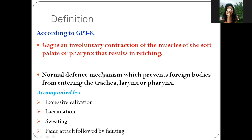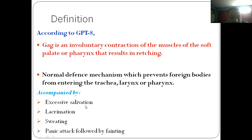It is a normal defense mechanism which prevents foreign bodies from entering the trachea, larynx or pharynx. This gag reflex is usually accompanied by excessive salivation, lacrimation (which means tearing), sweating and panic attack followed by venting. These are the symptoms with which we will actually identify the starting of a gag reflex.